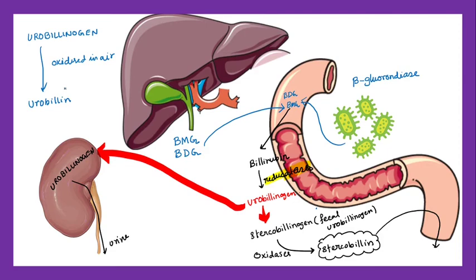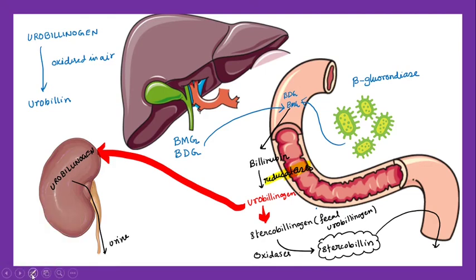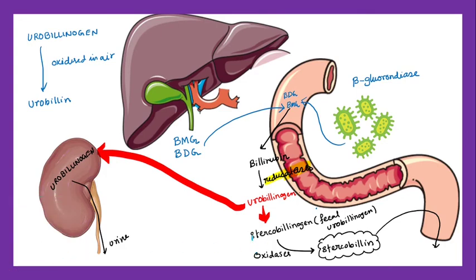So to summarize: stercobilinogen is nothing but the leftover urobilinogen in the gut. Urobilinogen is nothing but a bacterial degradation product of bilirubin. Urobilinogen upon oxidation in open air forms urobilin, and stercobilinogen upon oxidation by bacteria forms stercobilin.